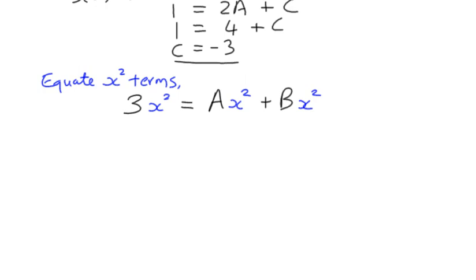I just wrote these in to remind us that we're dealing with x squared terms. So, in actual fact, we're really just interested in the coefficients, because we know when we're adding x squared terms, it's really we're just adding the numbers in front of each of the terms. So, 3 is equal to A plus B. We already know that A is 2. And substituting 2 in tells us that B has to have the value 1.